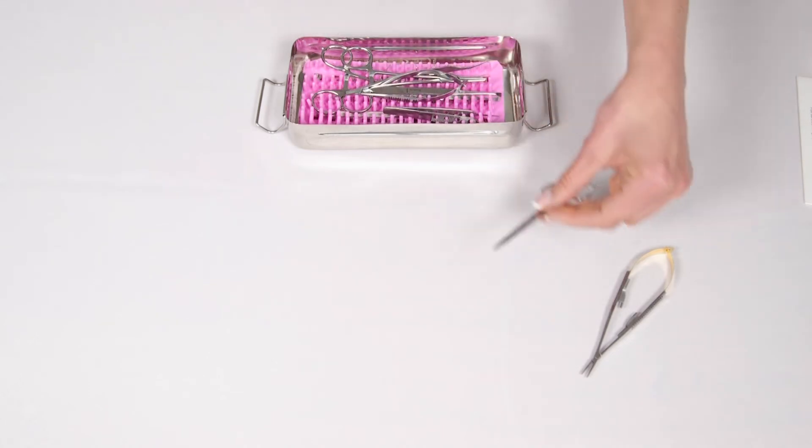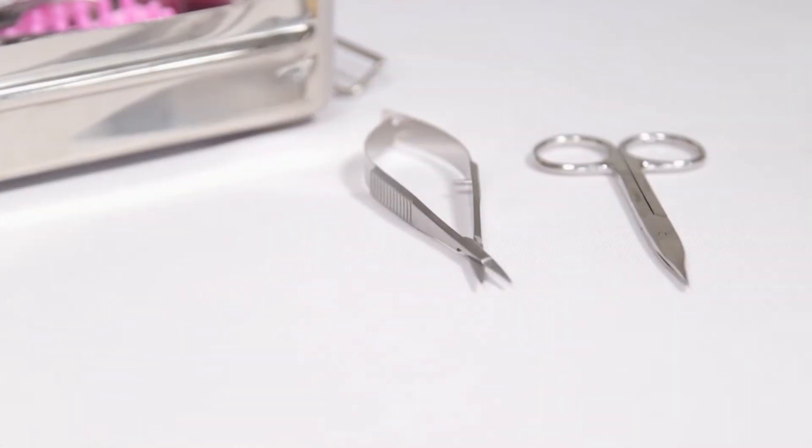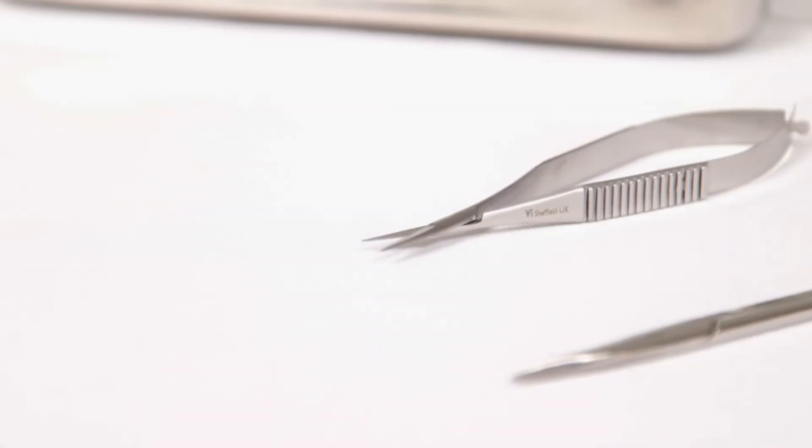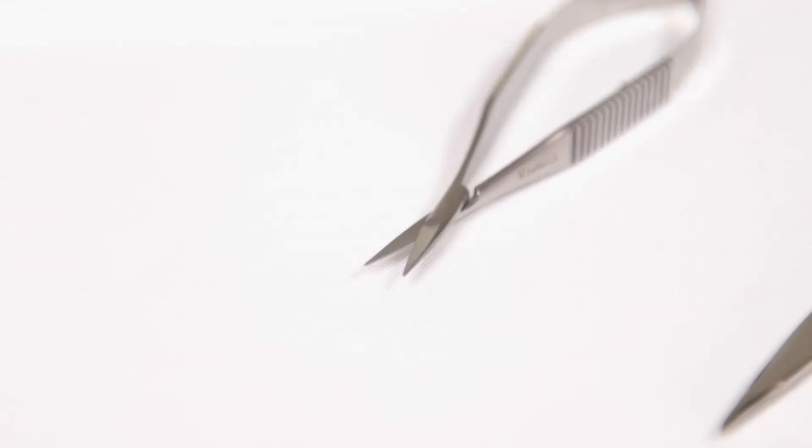There are two different types of scissors included in the kit, a pair of Stevens tenotomy scissors designed for precision cutting and a pair of Castraveo scissors which are a light, delicate and precise scissor commonly used in corneal procedures.